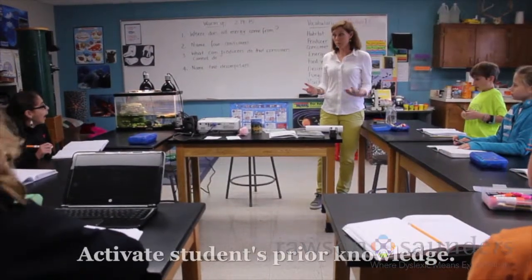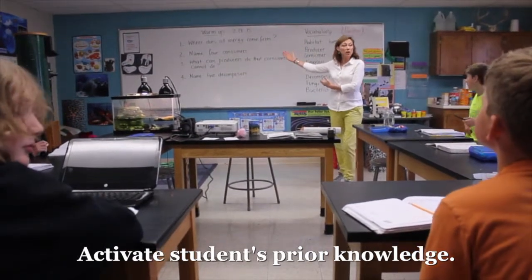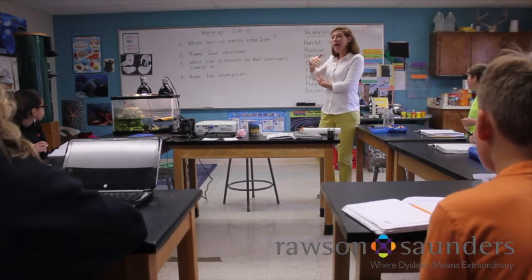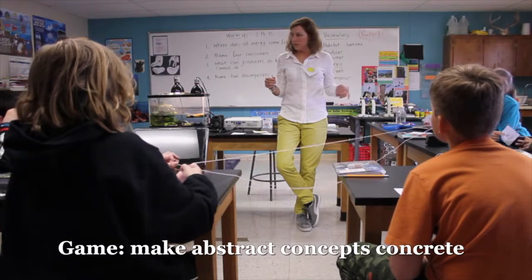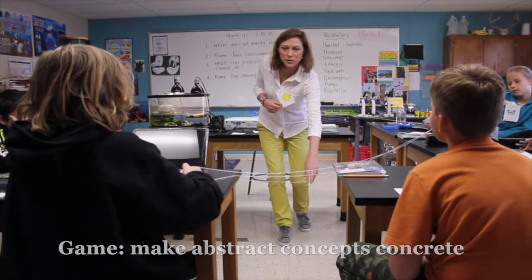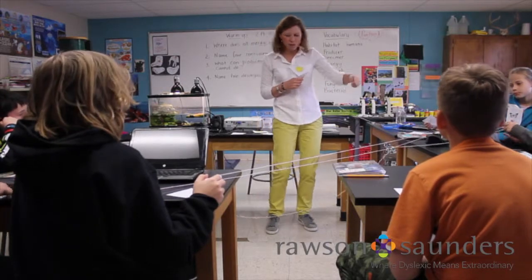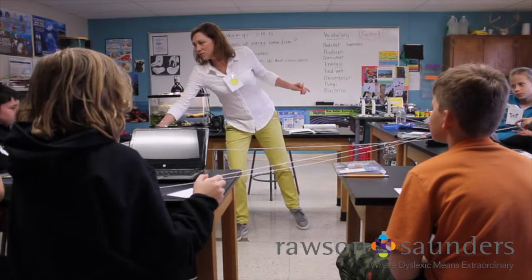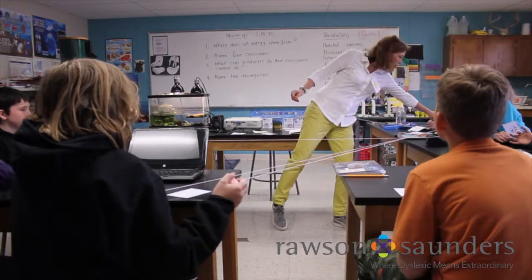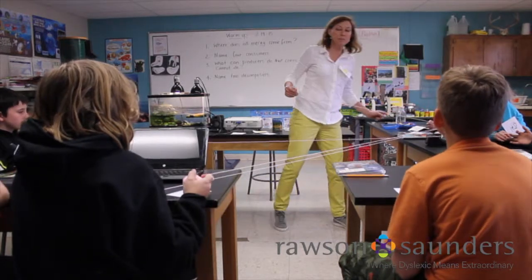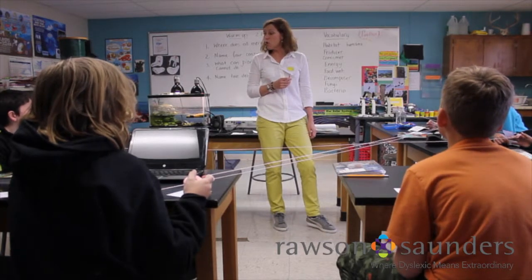Yesterday we made food webs. Do you remember? You came up to the board and we all drew lines to show our food webs. We're going to continue to learn about that today, and we're going to play a couple of games. What have we made here? A web — like the one we made on the board yesterday. Can you wrap it so that it's not all drapey? Let's imagine that all the coneflowers — that's Alden — let's imagine all the coneflowers were killed with a pesticide or a herbicide.